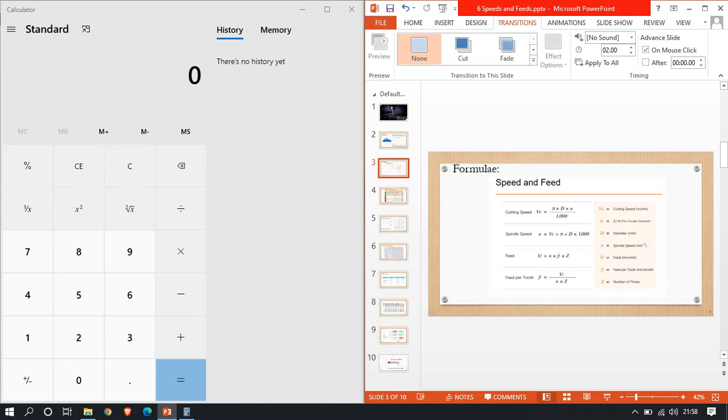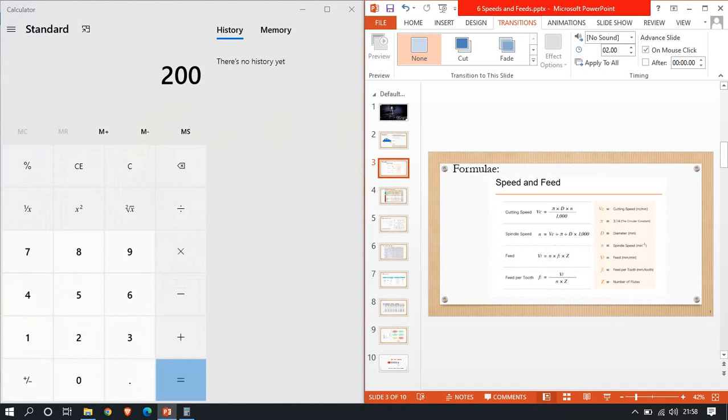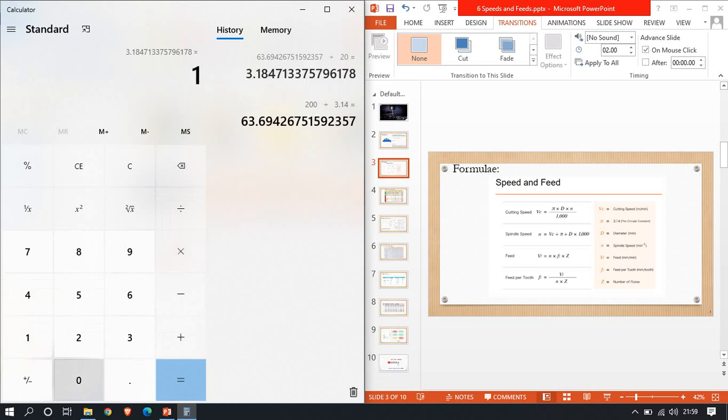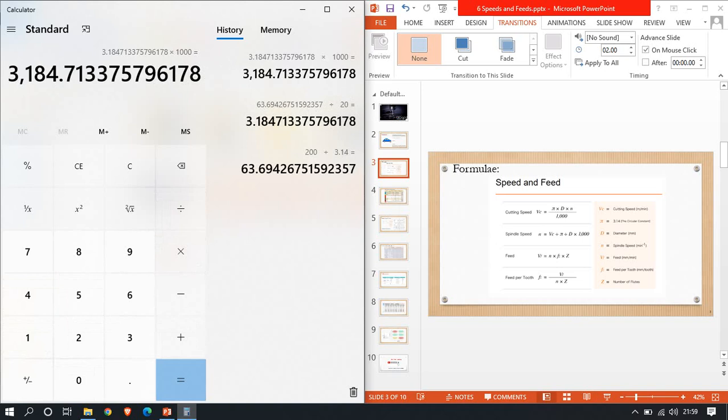So the Vc value, 200, divided by pi value which is 3.14, divided by D, cutting tool diameter, suppose 20mm, into 1000, equals 3186. So 3186 is the spindle speed value.